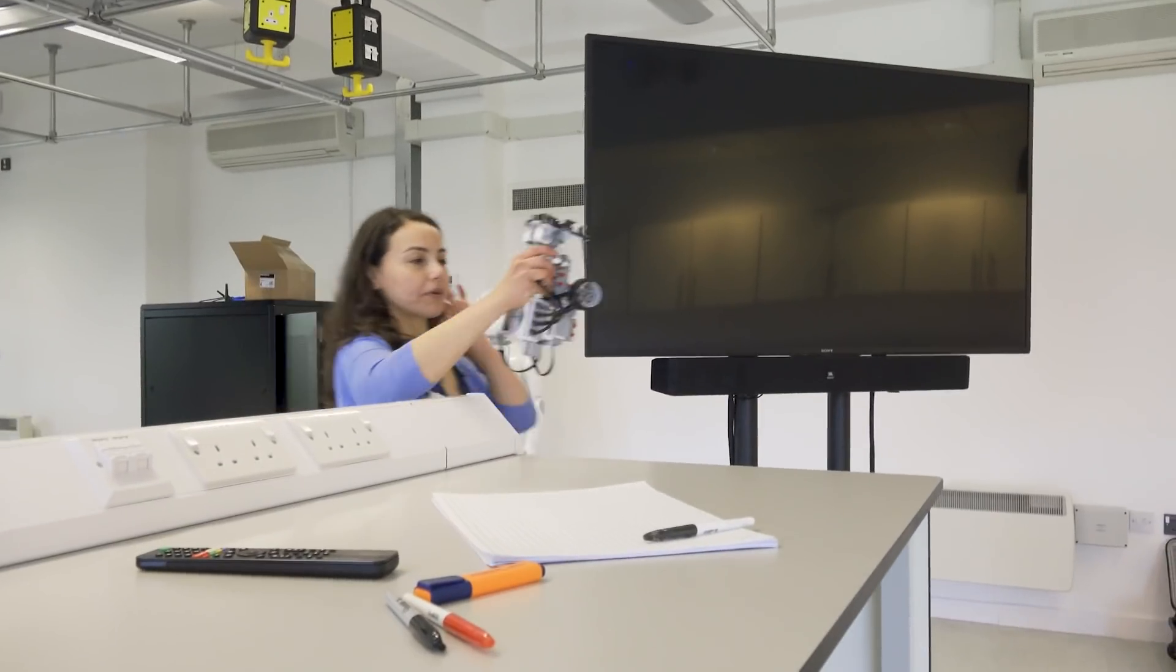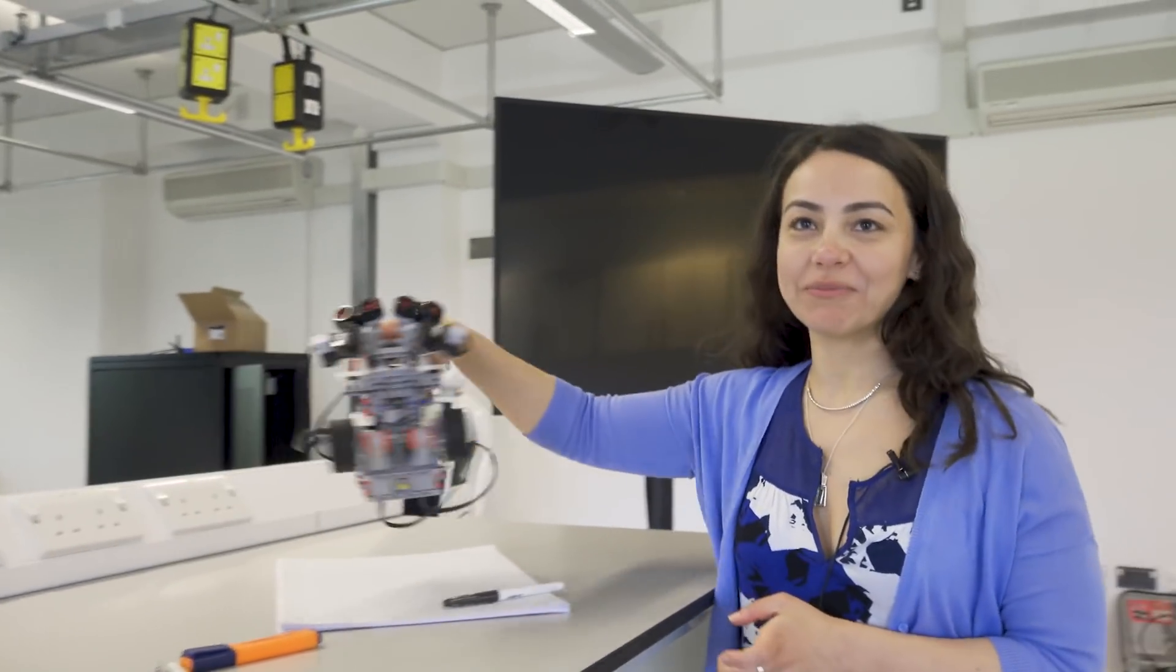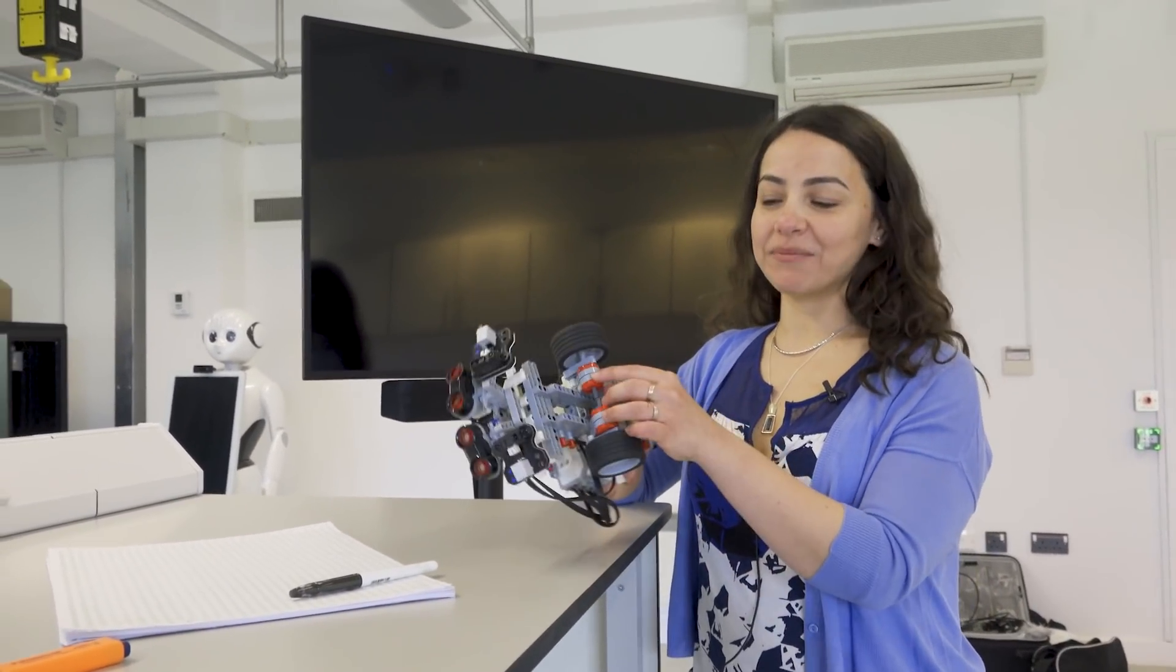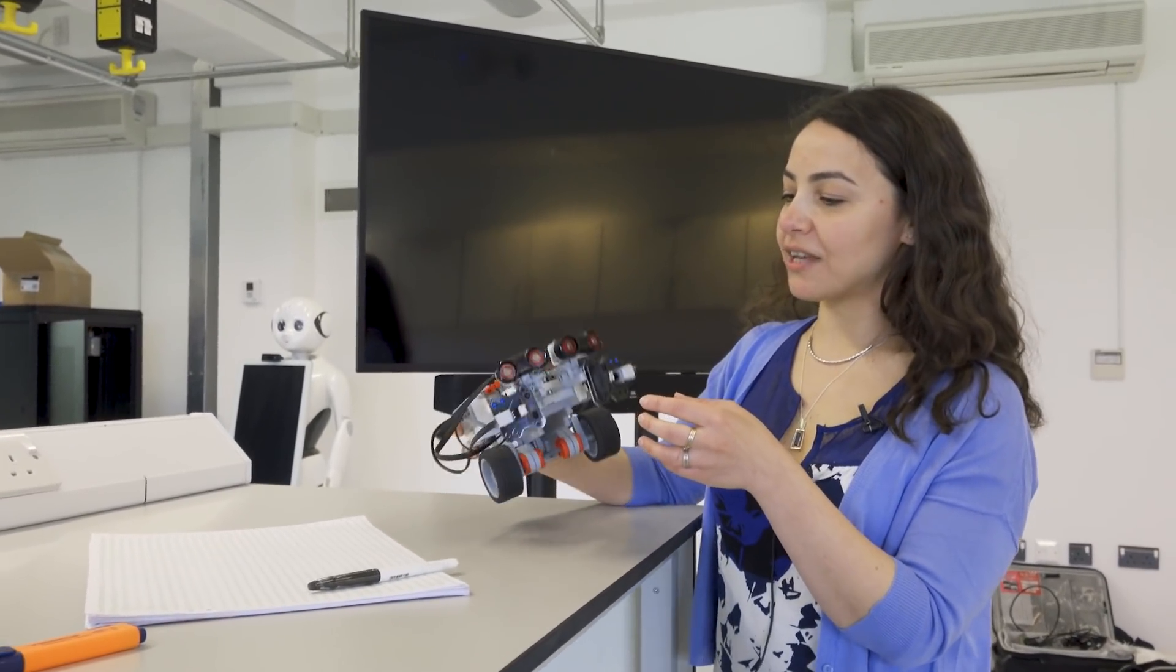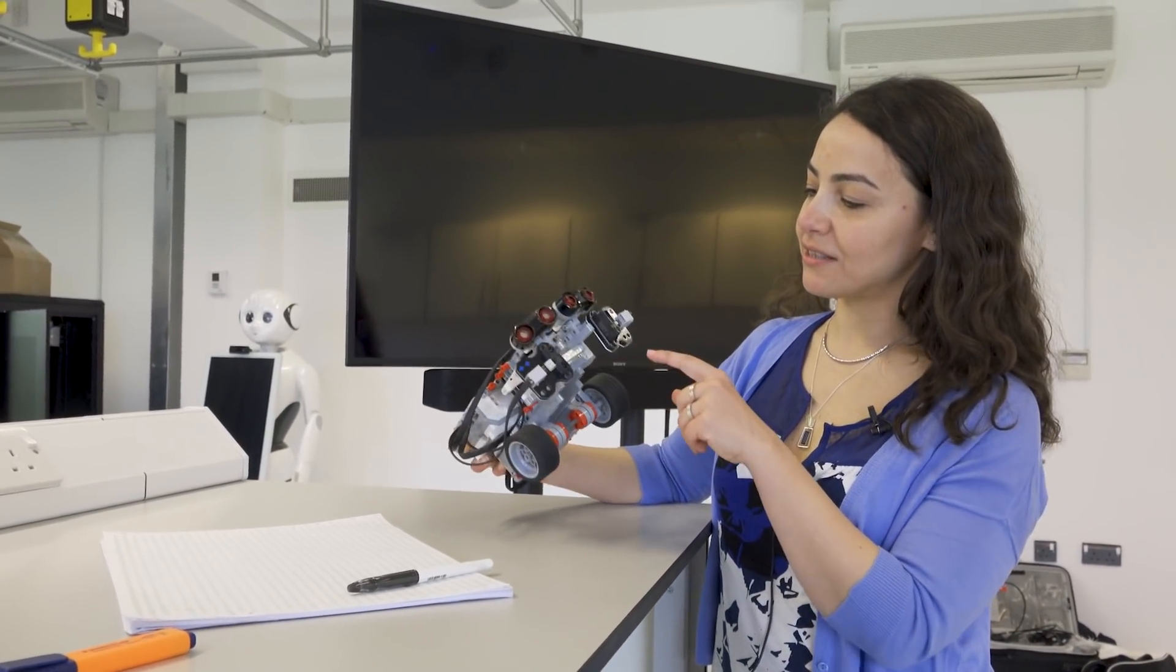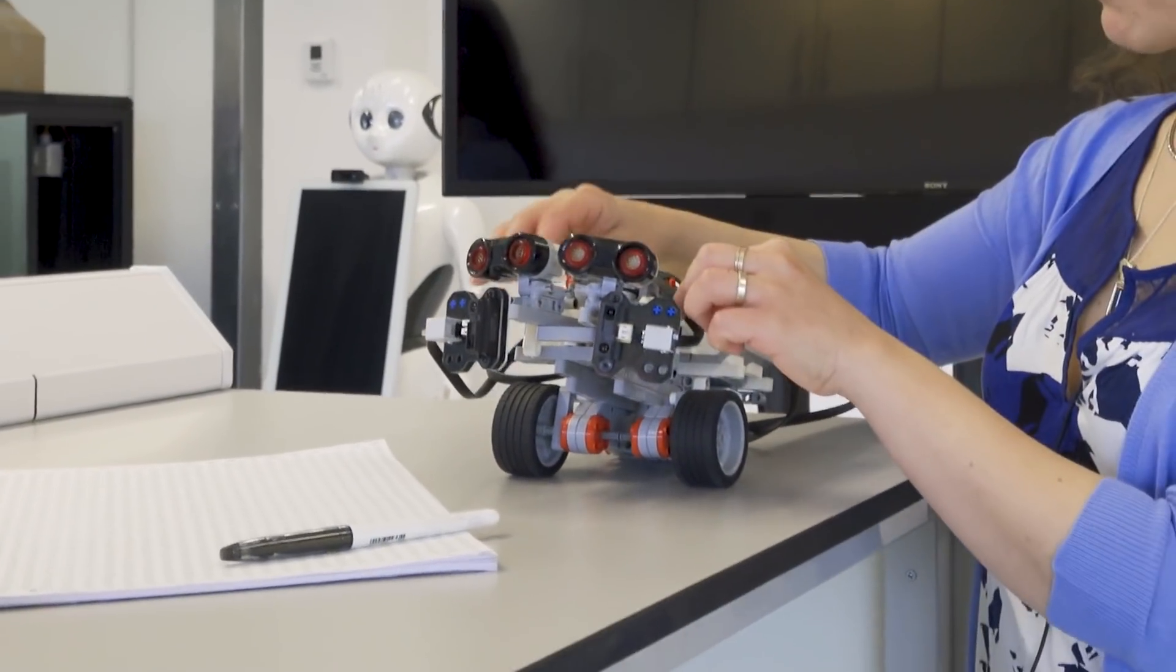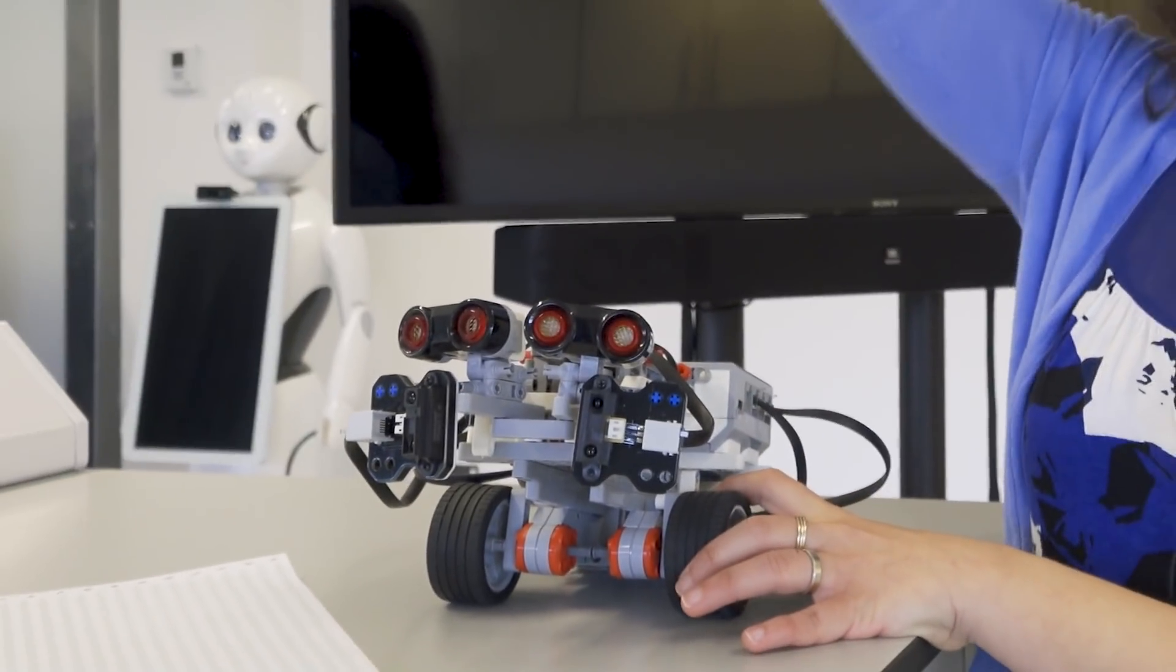This is a toy mobile robot. It has actuators—motors here which drive these wheels—and it has several sensors such as sonar sensors, infrared sensors, and a color sensor that looks at the ceiling because this robot was trying to find its way by looking at landmarks on the ceiling.